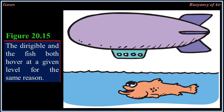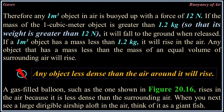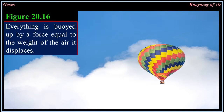Figure 20.15: The dirigible and the fish both hover at a given level for the same reason. Therefore, any 1 cubic meter object in air is buoyed up with a force of 12 newtons. If the mass of that object is greater than 1.2 kilograms — so that its weight is greater than 12 newtons — it will fall to the ground when released. If a 1 cubic meter object has a mass of less than 1.2 kilograms, it will rise in the air. Any object that has a mass less than the mass of an equal volume of surrounding air will rise. A gas-filled balloon rises in the air because it is less dense than the surrounding air.